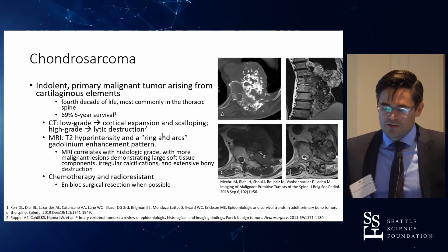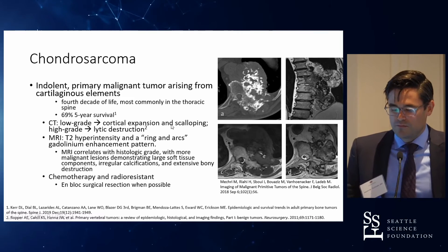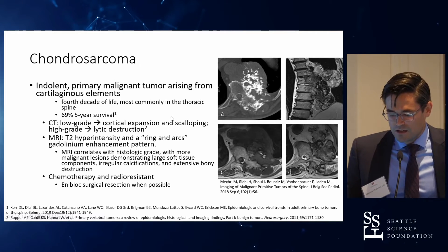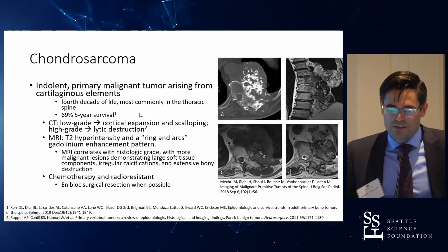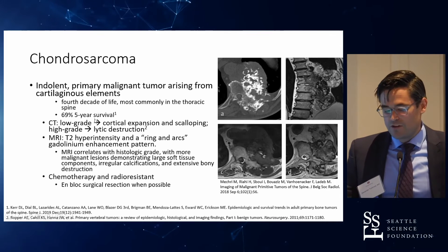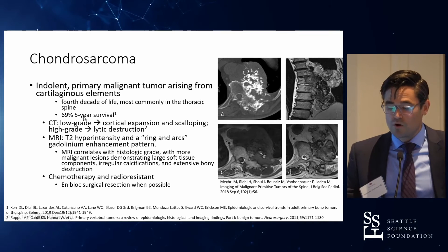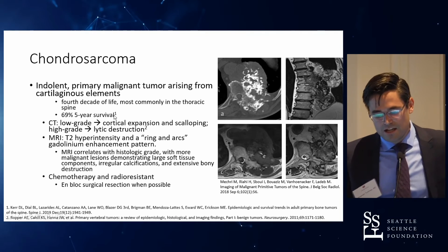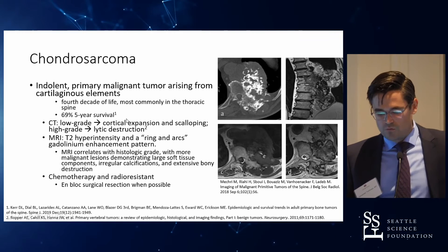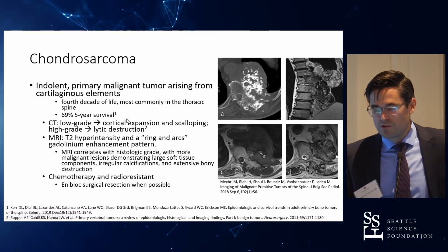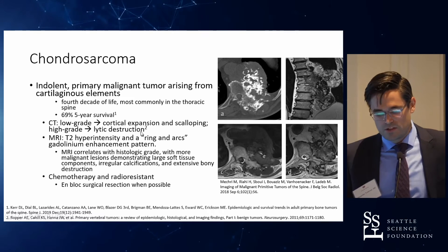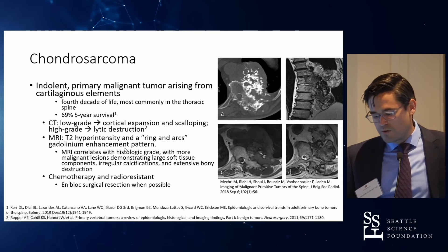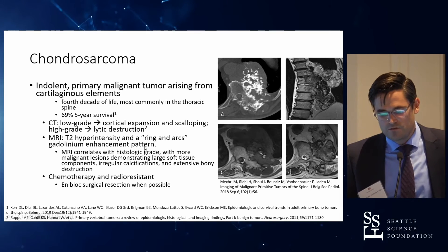Chondrosarcoma is a bit more indolent — a primary malignant tumor arising from cartilaginous elements. Five-year survival is certainly better because they're slower growing; nearly 70% of patients will survive to five years. They don't respond well to chemotherapy or radiation therapy due to their slow growth, so en bloc surgical resection, when possible, is the treatment of choice.